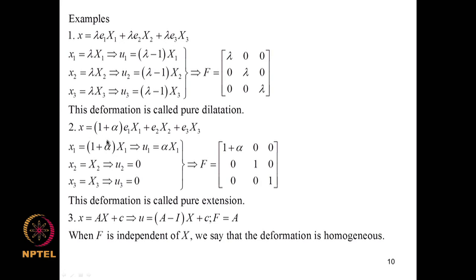Another example: x = (1 + α)X1 e1 + X2 e2 + X3 e3, so x1 = (1 + α)X1, giving u1 = αX1, while u2 = u3 = 0. The deformation gradient F is diagonal with (1+α) in the first entry and 1 elsewhere. This deformation is called pure extension.